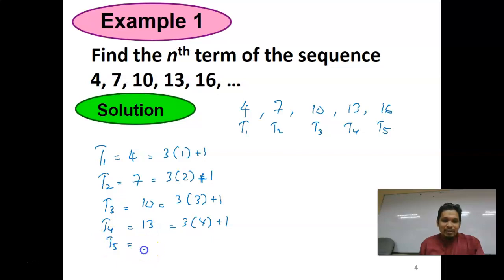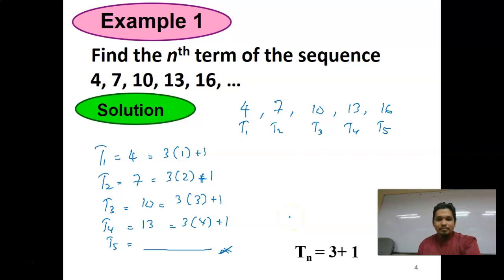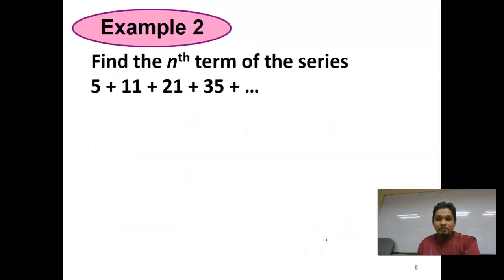For T5, try it yourself and prove that the fifth term equals 16. The formula is Tn = 3n + 1. Now, find the nth term of the series in Example 2.